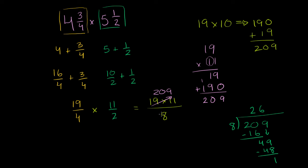So 209 over 8, or 209 divided by 8, is the same thing as 26. So this is equal to 26. And you have a remainder of 1. So 26 and 1 over 8. And we are done.